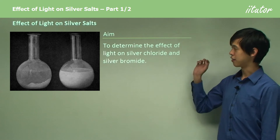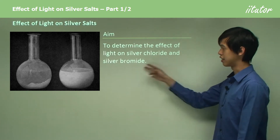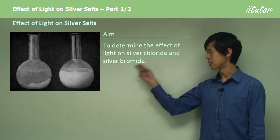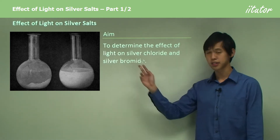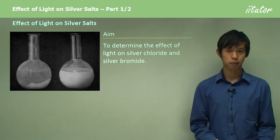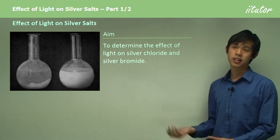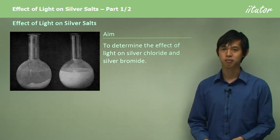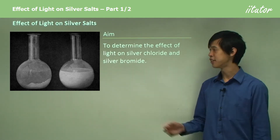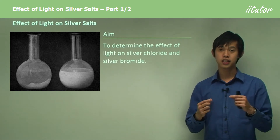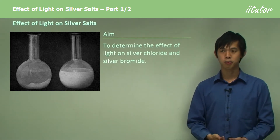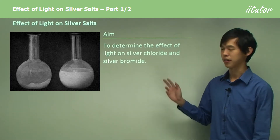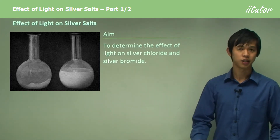Our aim is to determine the effect of light on silver chloride and silver bromide. These two substances were very popular before digital cameras were invented because they were used in photographic film. Before the digital age, film had silver ingrained in it, and when it got struck by light it would change, giving you a photograph of what was captured.